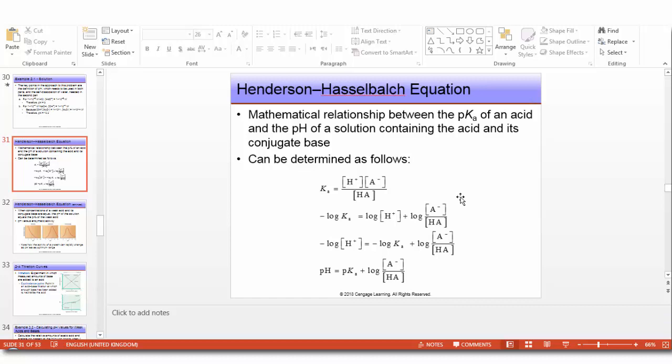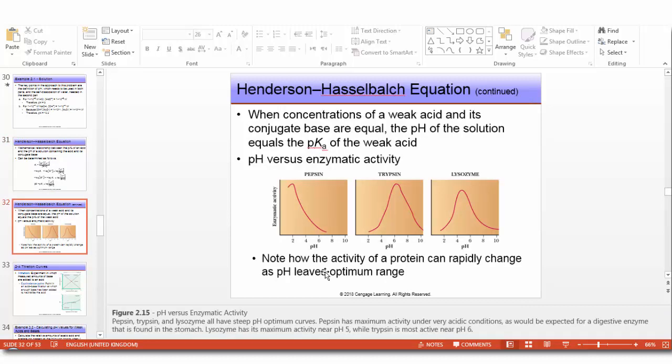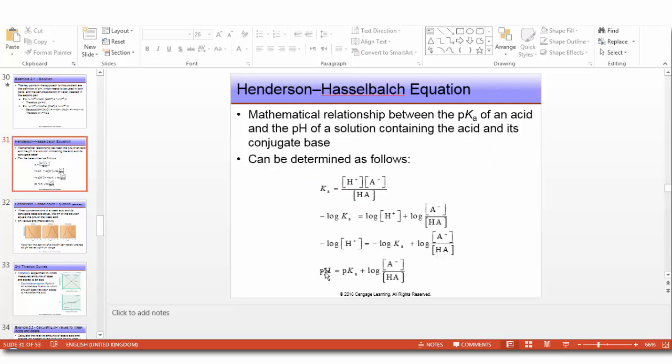Let's derive the Henderson-Hasselbalch equation. It is a mathematical relationship between the pKa of an acid and the pH of a solution containing the acid and its conjugate base. Ka equals [H+][A-]/[HA]. We take log of both sides, multiply by minus, and substitute the definitions: pH equals minus log [H+] and pKa equals minus log Ka. We then get the Henderson-Hasselbalch equation: pH equals pKa plus log [A-]/[HA].